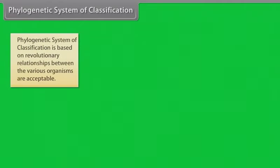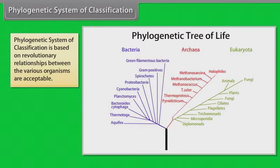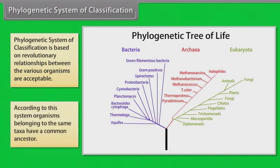Phylogenetic system of classification. Phylogenetic system of classification is based on revolutionary relationships between the various organisms are acceptable. According to this system, organisms belonging to the same taxa have a common ancestor.